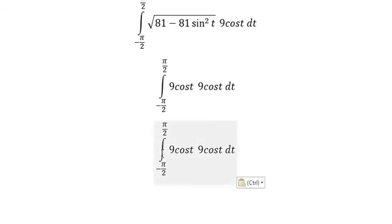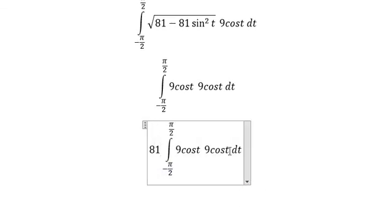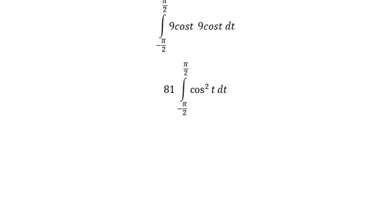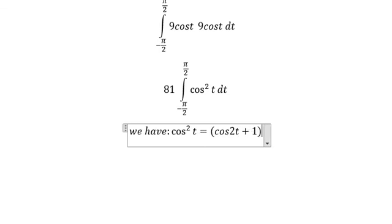We have 81 and cosine t squared. We use the identity cosine squared t equals cosine 2t plus 1, all over 2.